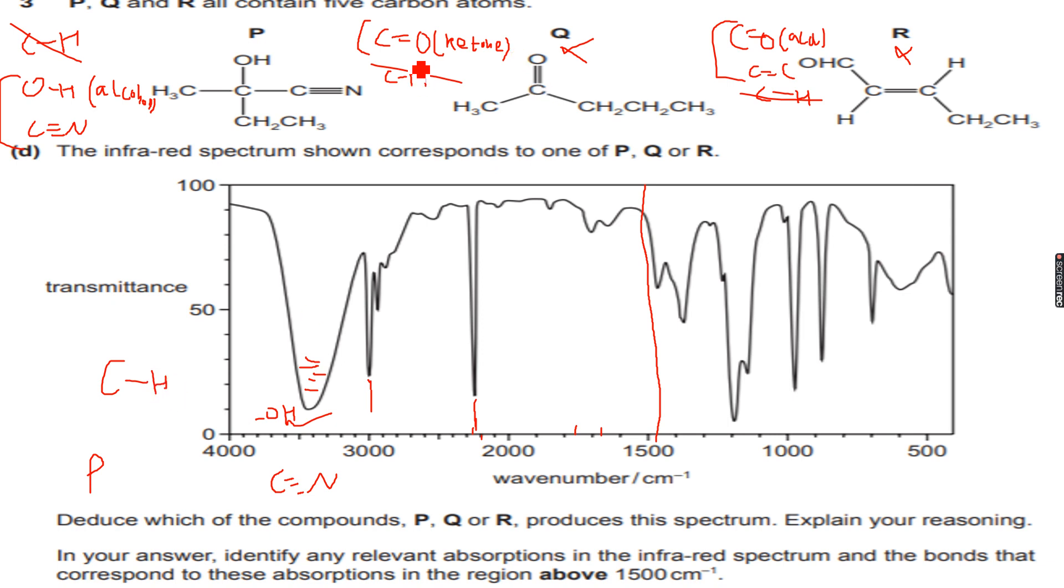We have proved all three bonds in this and we have also proved that the missing CO group from both, from the spectrum means it cannot be Q and R. So we have proved that this is the spectrum of P using the bonds in P and we have proved this is not the spectrum of Q and R by using the bonds in Q and R. So let's move forward now.